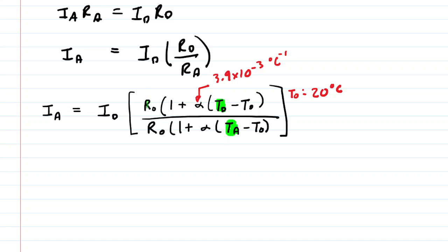This R naught value was not given in the question, but it won't matter because when we divide, the R naughts become 1. They effectively cancel out. And then finally, the current in Death Valley was given to us as 1 amp. So let's go ahead and plug everything in.